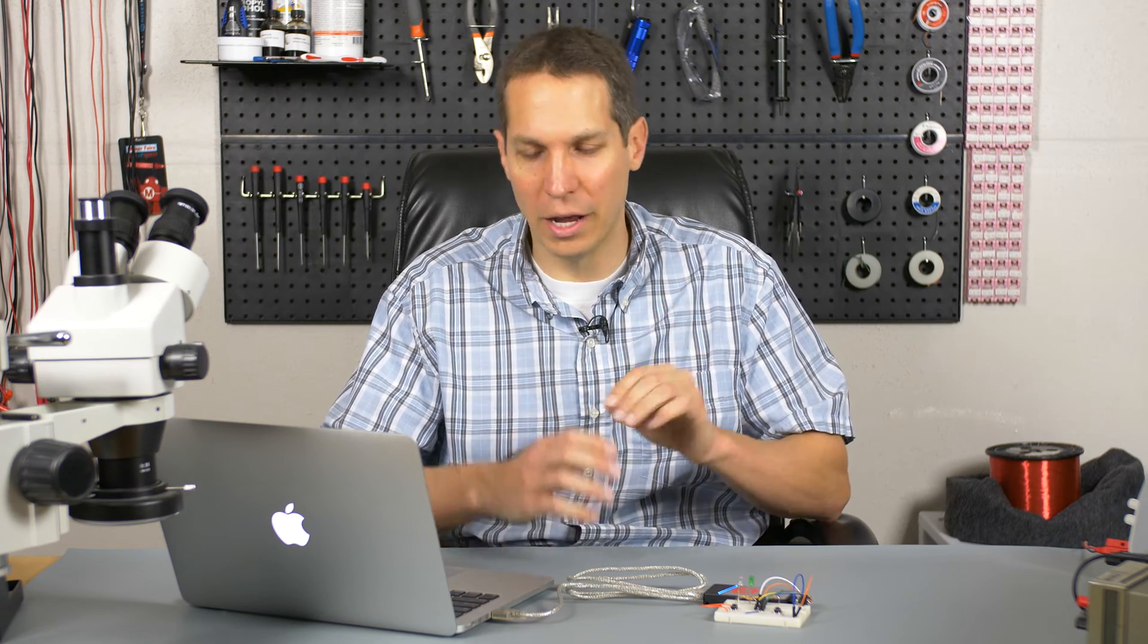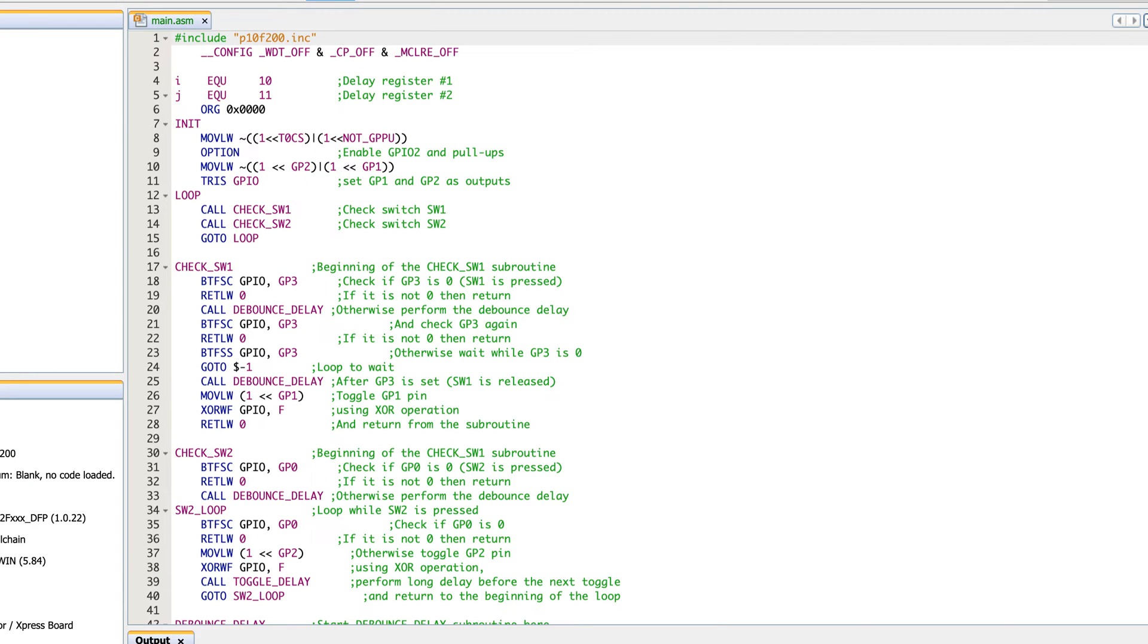One of the first things I want you to know as you're looking at the code that Sergey has put together is if you haven't seen it before, a pipe, that vertical line, is treated as an OR. So as you're looking at the initialization for that move literal on lines eight and 10, where it has T0CS pipe then one less than not GPPU, that is just a way of making it so you are toggling both of those bits without having to do more complicated or more painful things.